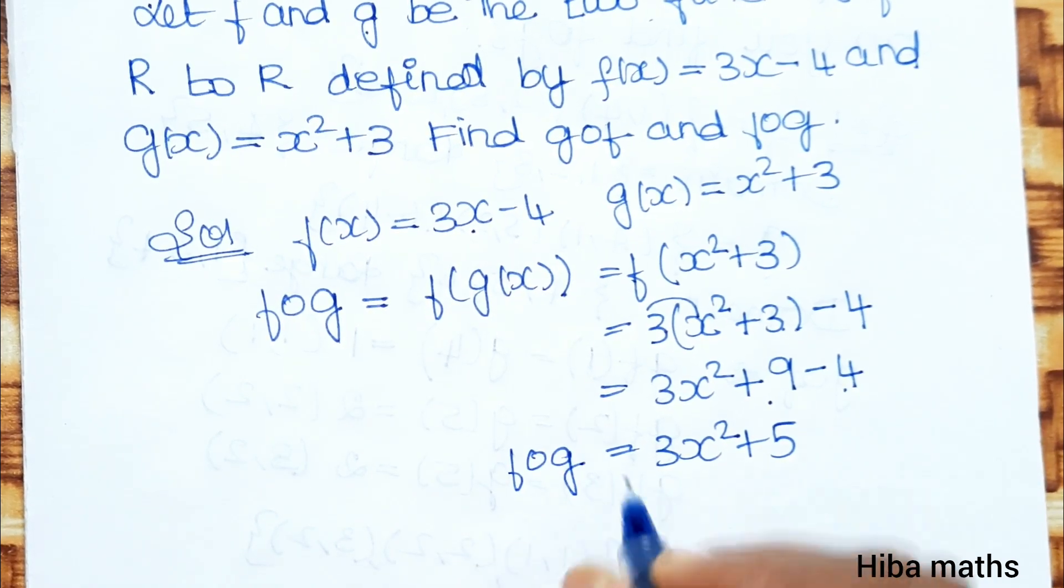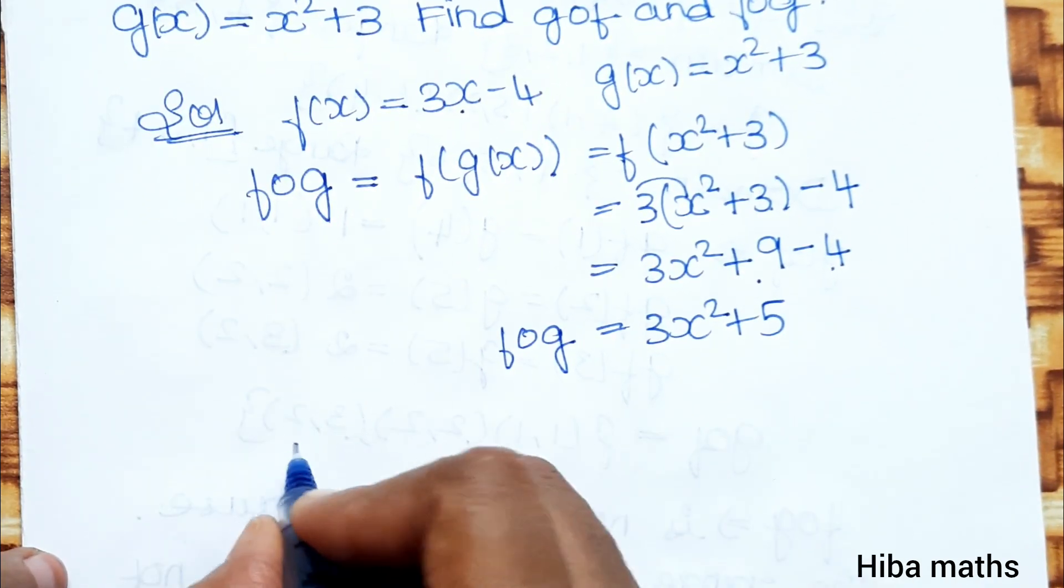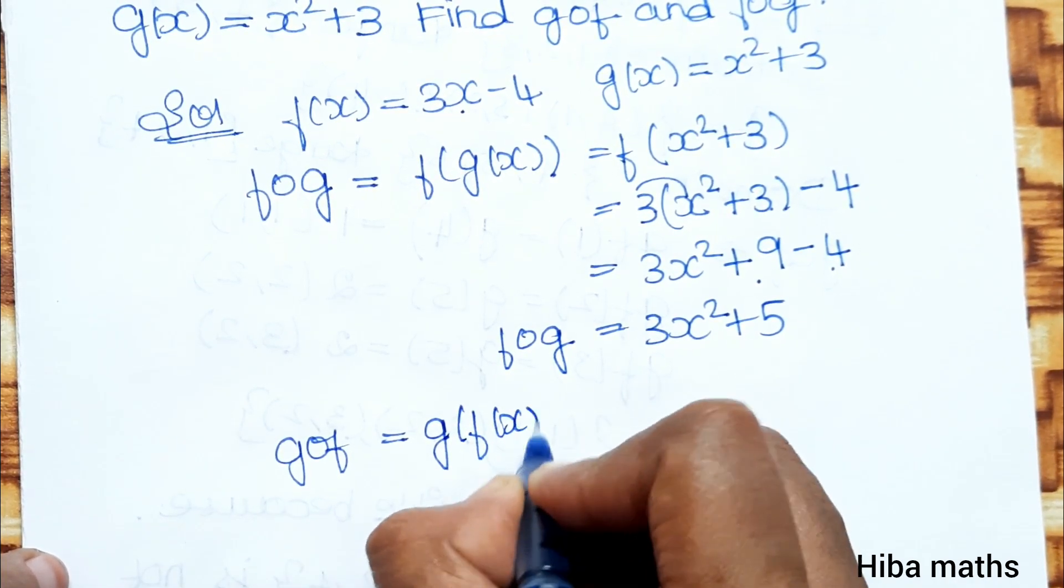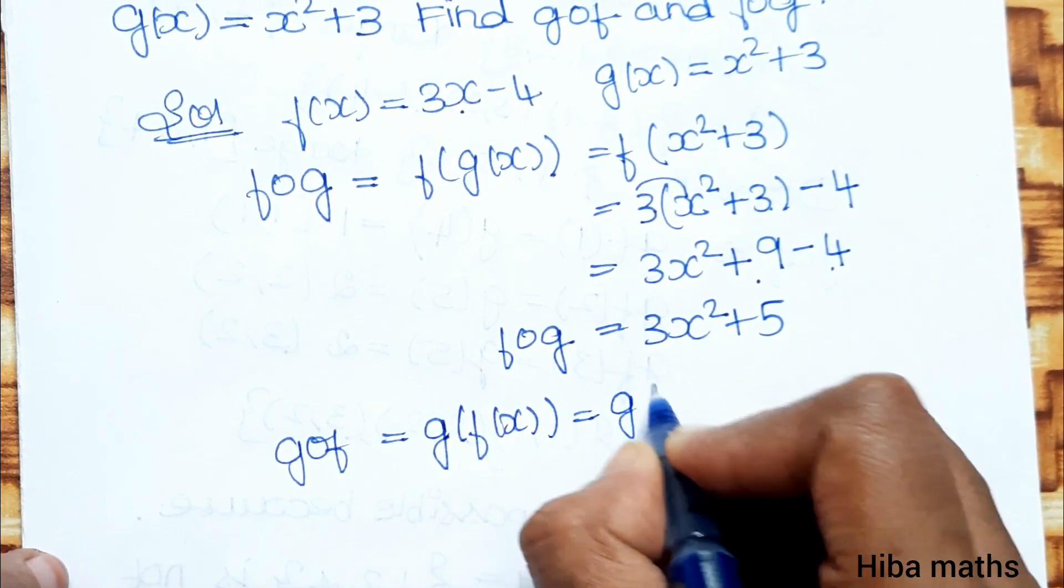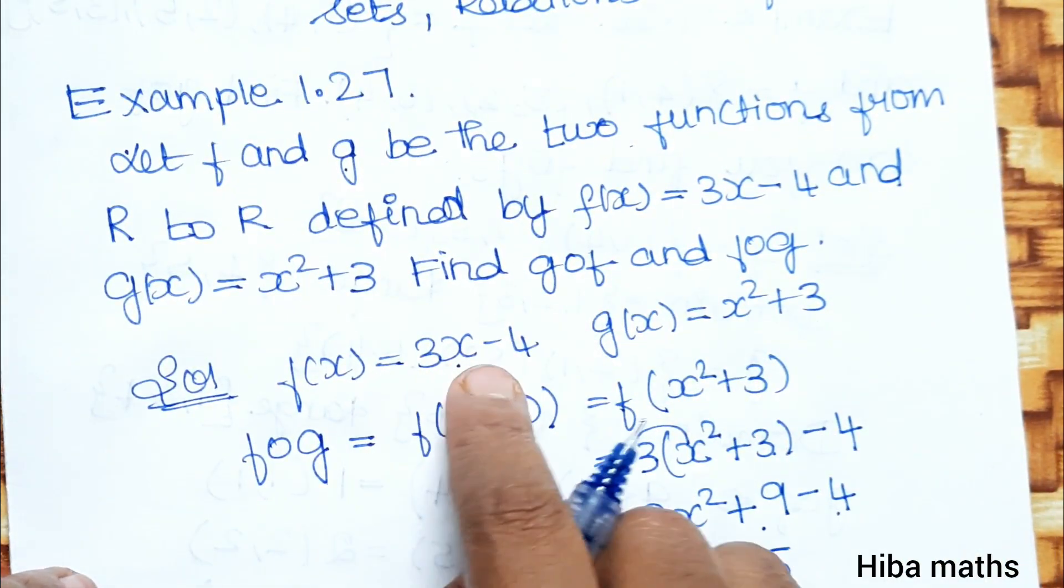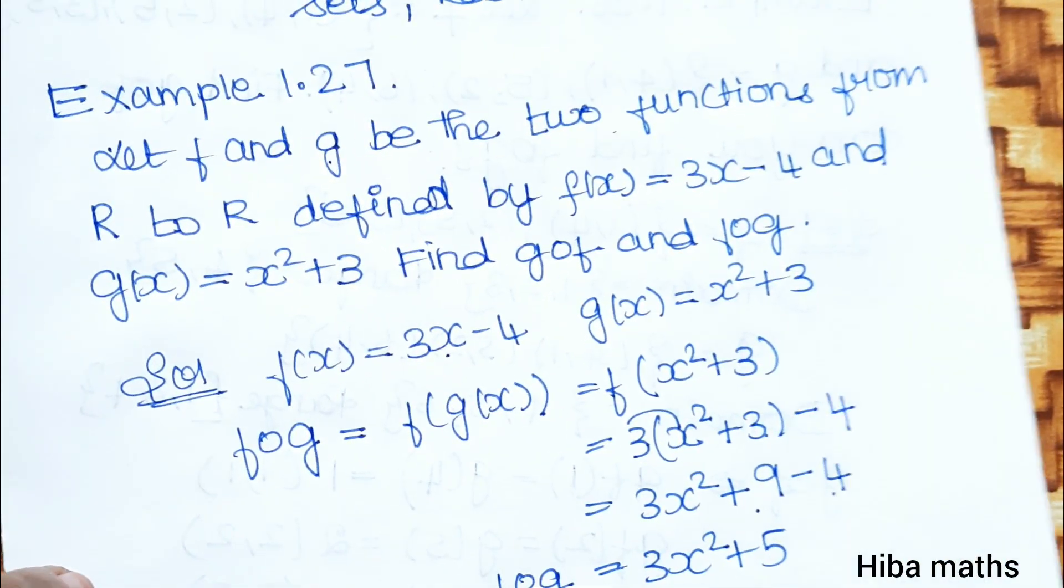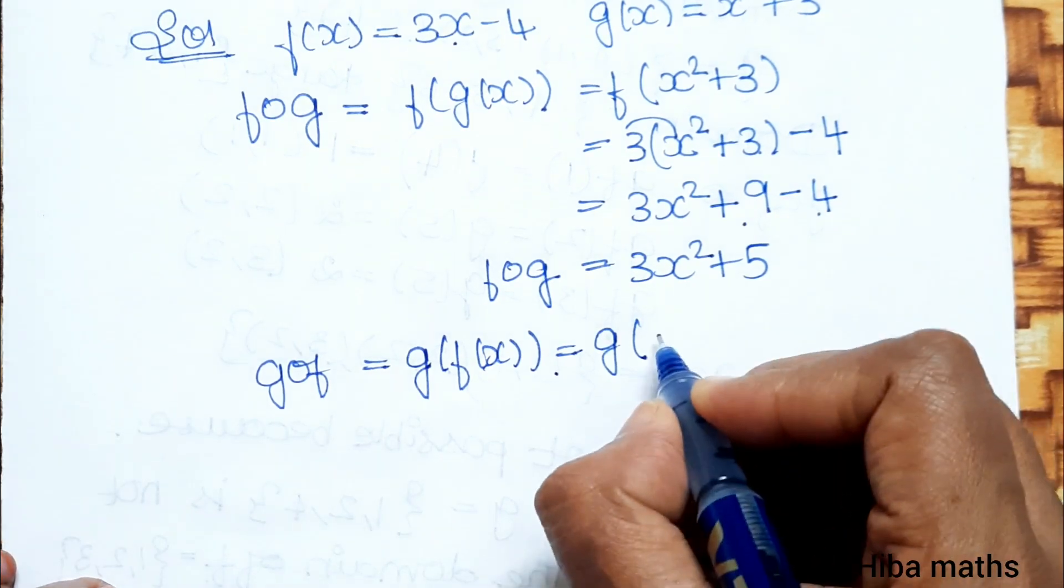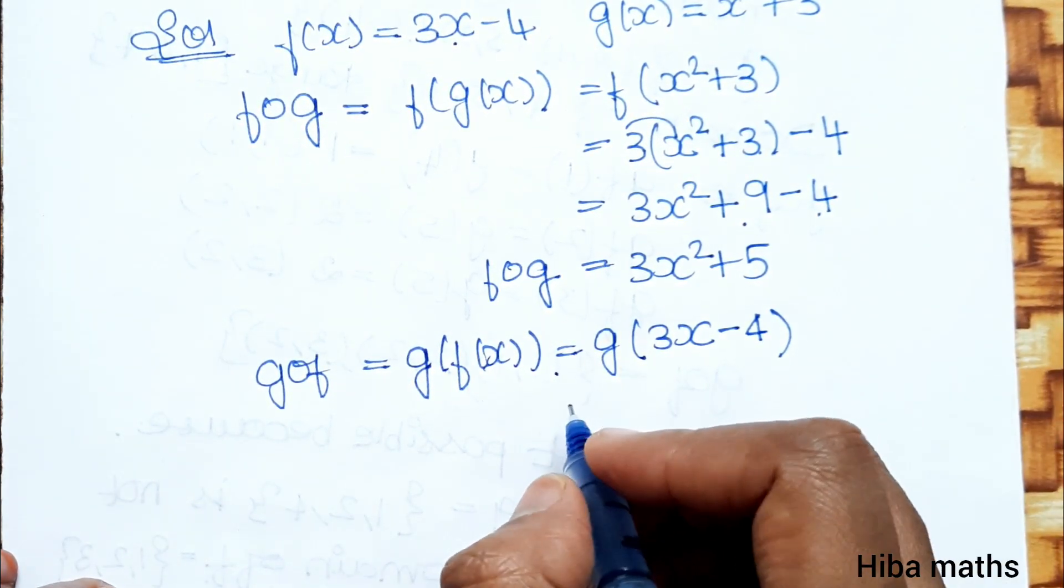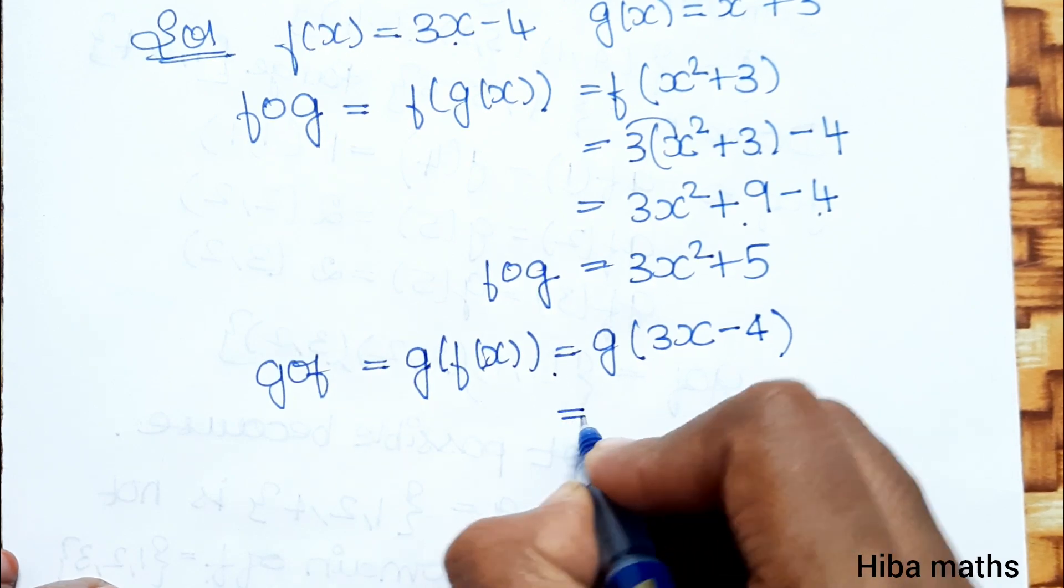Now let's find g of f. So g of f(x) equals g(3x minus 4). Instead of x, we substitute 3x minus 4 into g(x) which equals x square plus 3.